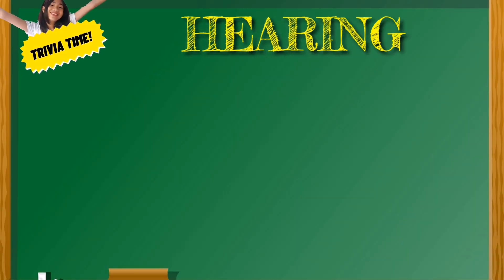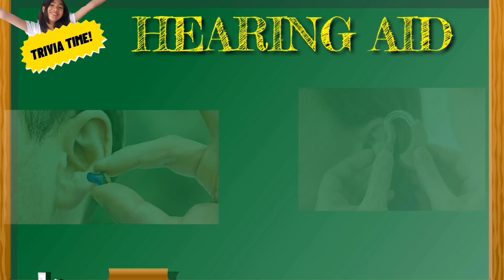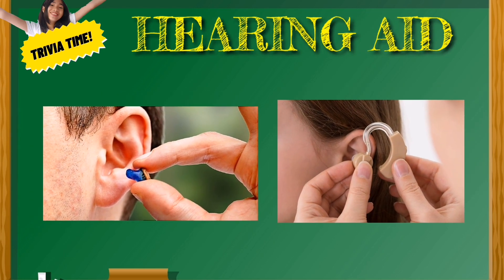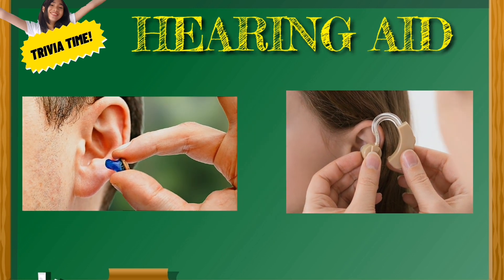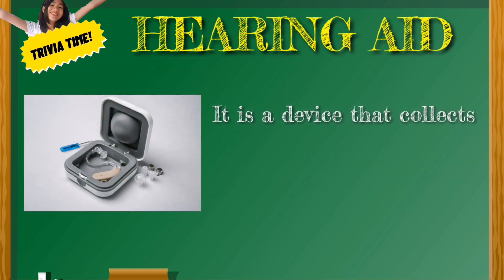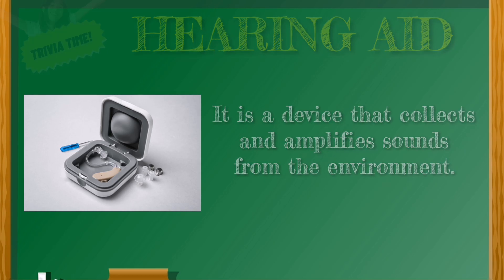Did you know that some people cannot hear? Their hearing is impaired. Some people with hearing impairment use a hearing aid so that they can hear sounds. A hearing aid is a device that collects and amplifies sounds.